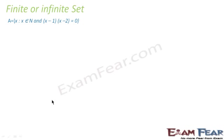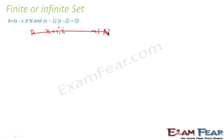Let's do some examples on finite and infinite sets. Example: set A where (x−1)(x−2) = 0 and x is a natural number. Solving gives x = 1 and x = 2, both natural numbers. So set A = {1, 2}, meaning n(A) = 2. Since it has a finite number of elements, A is a finite set.